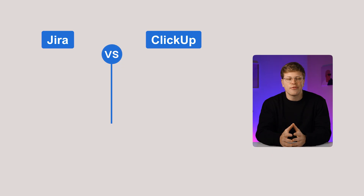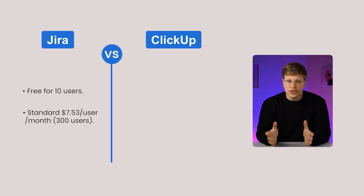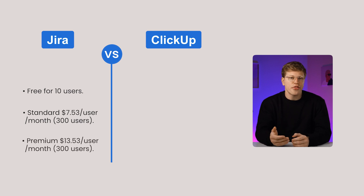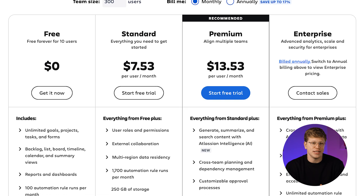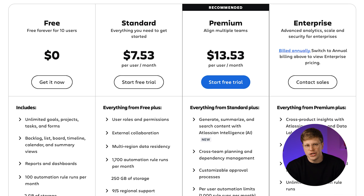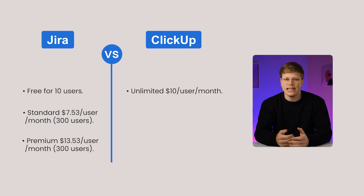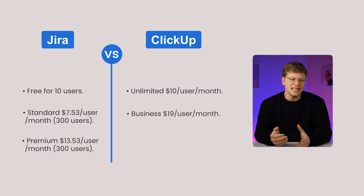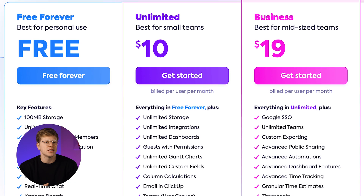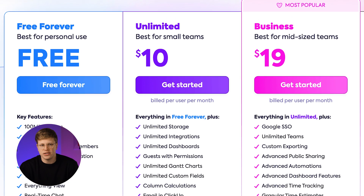Pricing. JIRA has a free plan for up to 10 users. For 300 users, the standard plan is $7.53 per user per month, and premium is $13.53 per user per month. Both include more features as you move up, and yearly billing makes them a bit cheaper. ClickUp also has a free plan with more tools than JIRA's. The unlimited plan is $10 per user per month, and business is $19 per user per month. Higher tiers add features like workload tracking and advanced permissions. Yearly billing lowers the price. Verdict: ClickUp's free plan is more generous, but JIRA's standard plan starts cheaper at this team size.